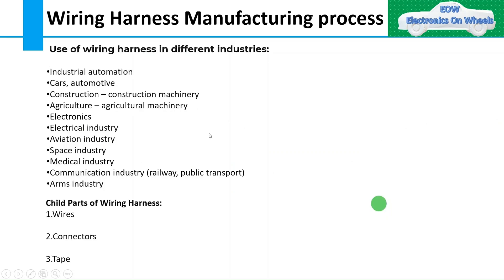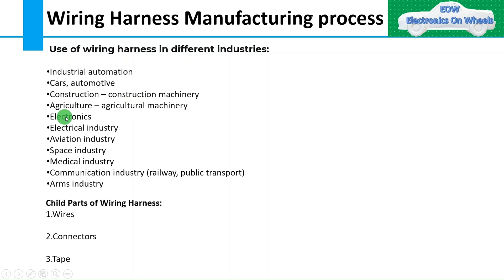Coming to our next point: uses of wiring harness. Small or big, wiring harness is used in almost all industries. Here we have given some examples where wiring harness is used: industrial automation, cars, automotive, construction, construction machinery, agriculture, agricultural machinery, electronics, electrical industry, aviation industry, space industry, medical industry, communication industry, railway, public transport, and arms industry.